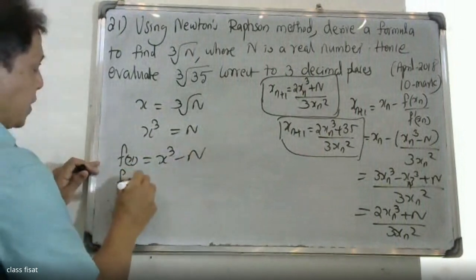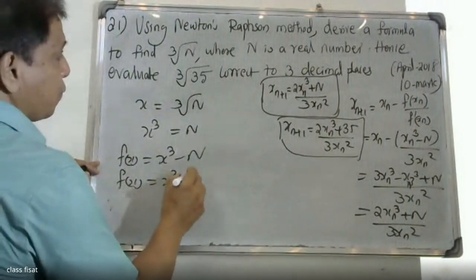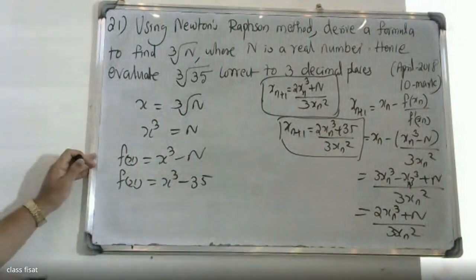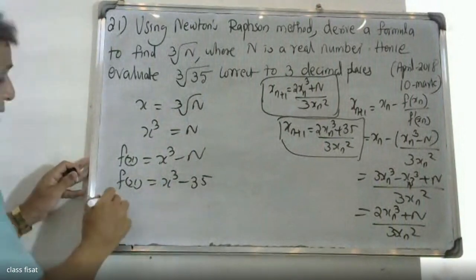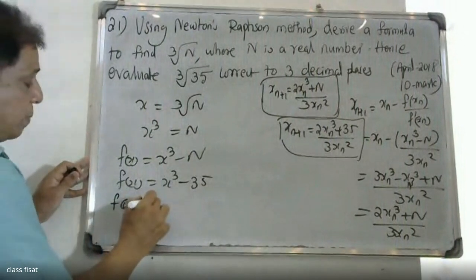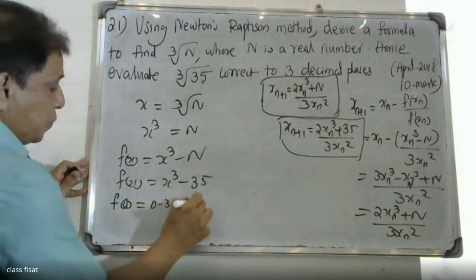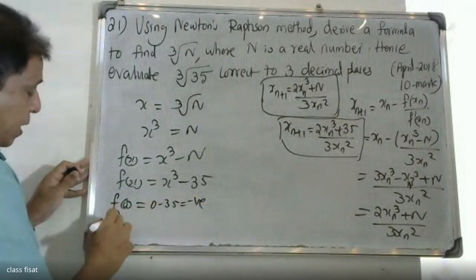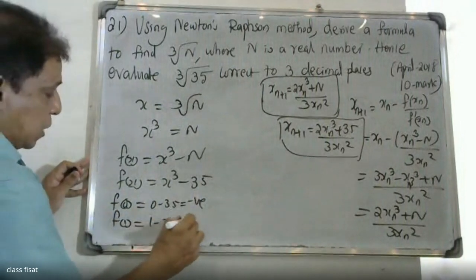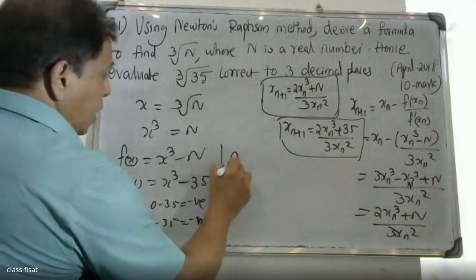To find the initial value x0, we substitute n equals 35. When x equals 3, f(3) is negative. When x equals 4, f(4) is positive. So the root lies between 3 and 4.